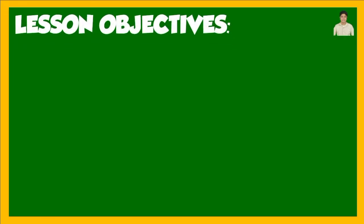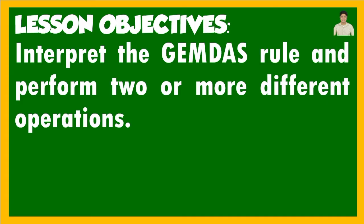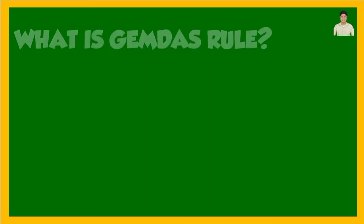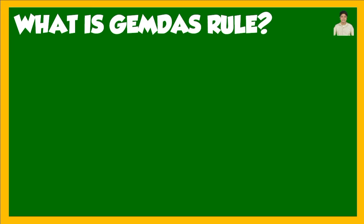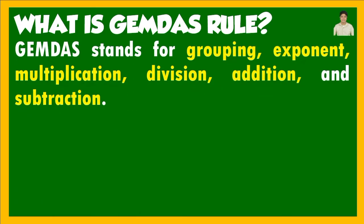Our lesson objective is to interpret the GEMDAS rule and perform two or more operations. Before we proceed, let us first discuss the GEMDAS rule. GEMDAS stands for Grouping, Exponent, Multiplication, Division, Addition, and Subtraction.